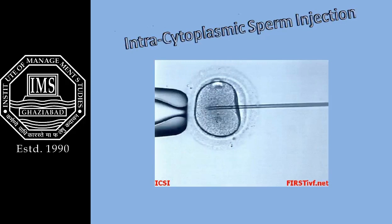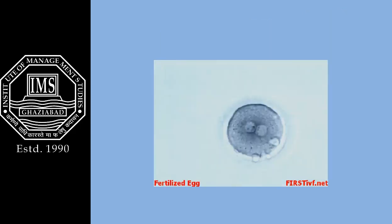The sperm, containing the man's half of the genetic contribution, is injected into the egg containing the woman's half of the genes. This is day one of fertilization. As early as 12 hours after fertilization, you can see two bundles of genetic material — one from each parent — called pronuclei. By 18 to 20 hours after fertilization, these pronuclei fuse, combining genetic material from mom and dad.